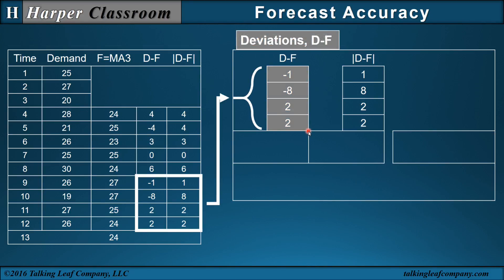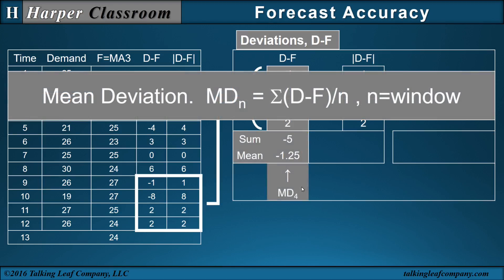So let's first consider our deviations. Let's sum the deviations and then take the mean, and that will be our mean deviation with a window of four. Here's the equation, where the sum of our deviations is minus five, n is four, and so our mean deviation is minus 1.25.